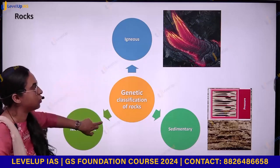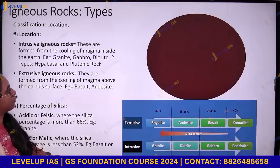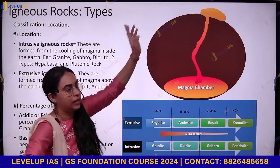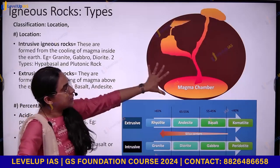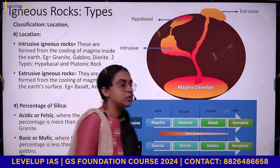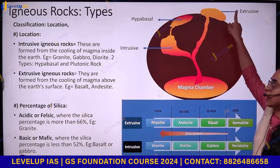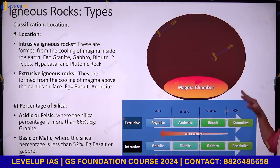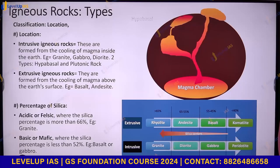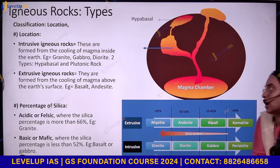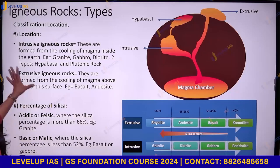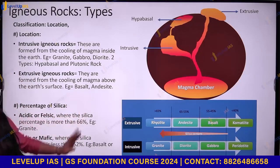Igneous rock is formed because of cooling and solidification of magma. It can cool inside the crust — called intrusive igneous rocks — or outside the crust — called extrusive igneous rocks. Examples of intrusive igneous rocks are granite, gabbro, and diorite. Examples of extrusive igneous rocks are basalt and andesite.